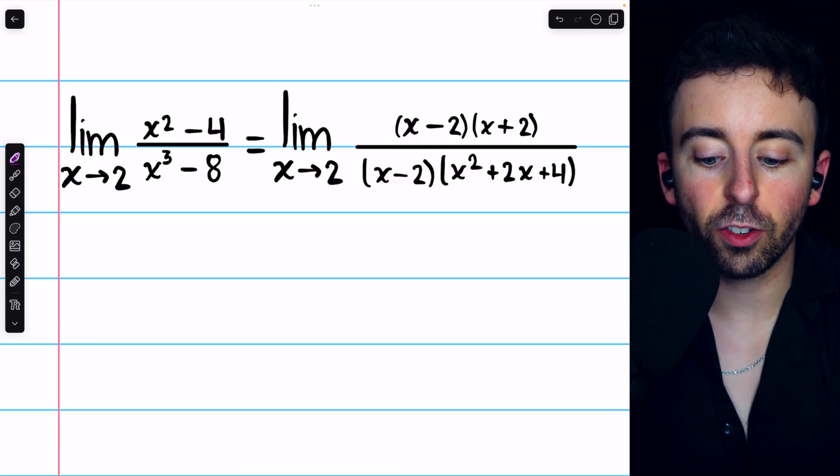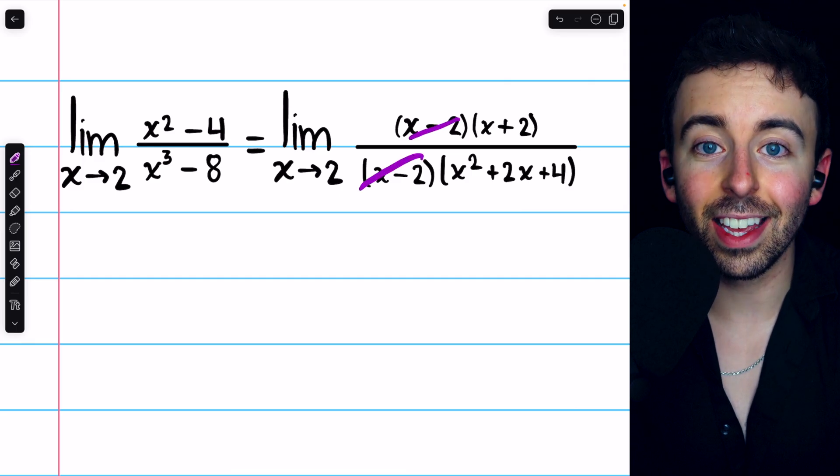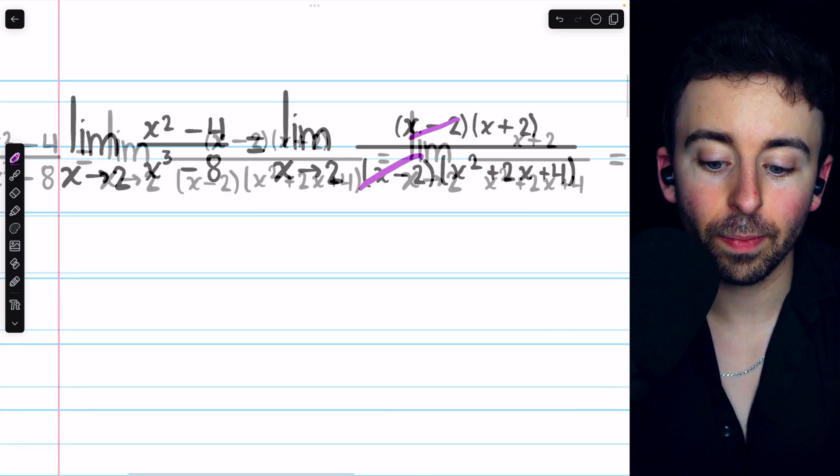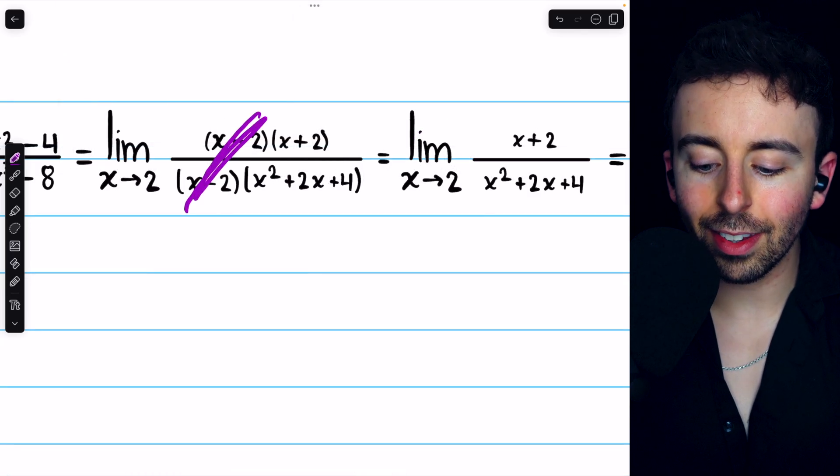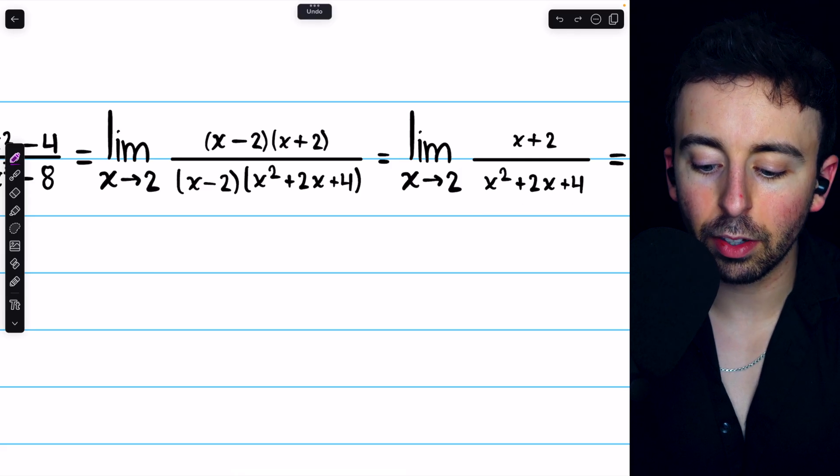Once we perform those factorizations, we see that we can cancel the x minus 2s. This totally removes the problem. Once we cancel out those x minus 2s, all that's left is x plus 2 divided by x squared plus 2x plus 4.